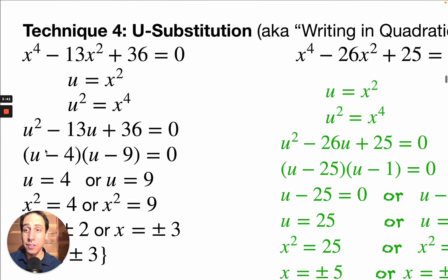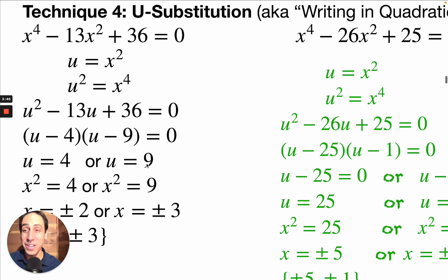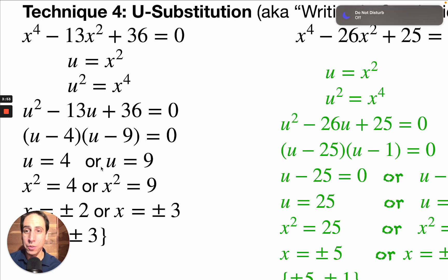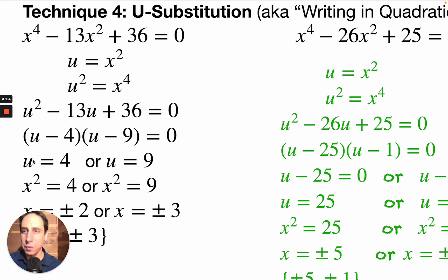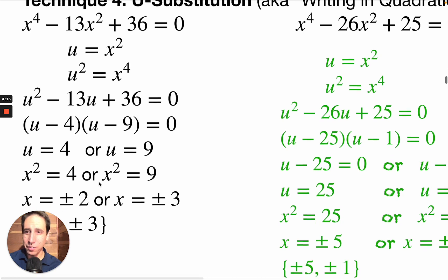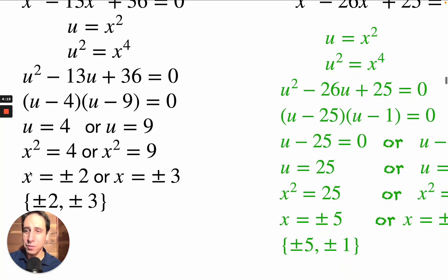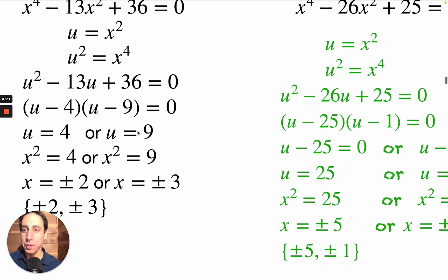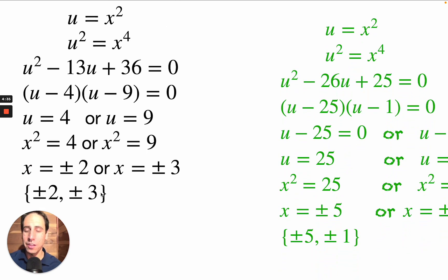Now there's an important new step. Once we get u equals 4 or u equals 9, we're not finished — we started with x, we've got to end with x. So we back-substitute: since u equals x squared, we rewrite as x squared equals 4 and x squared equals 9. Taking the square root of both sides gives x equals plus or minus 2 and x equals plus or minus 3. There are four solutions: plus or minus 2 and plus or minus 3.